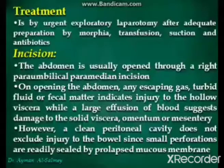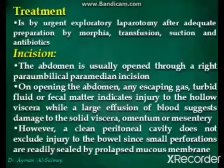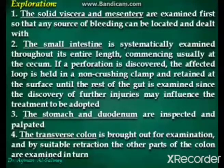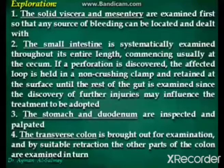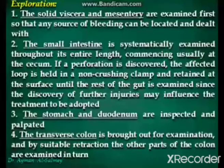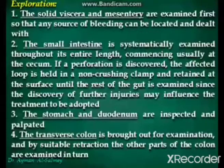A clean peritoneal cavity does not exclude injury to the bowel, since small bowel perforations are usually sealed by the prolapsed mucous membrane. During exploration, solid viscera and mesentery are examined first so that any source of bleeding can be located and dealt with. The small intestine is systematically examined throughout its entire length, commencing usually at the cecum. If a perforation is discovered, the affected loop is held in a non-crushing clamp and retained at the surface until the rest of the gut is examined, since the discovery of further injury may influence the treatment to be adopted.